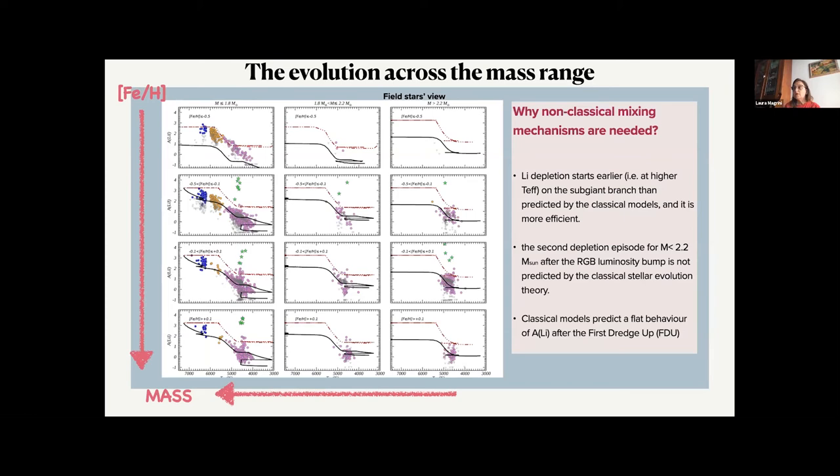And here we separated mass bins along the columns and in metallicity bins. Since the field population has a large range, a wide range of metallicity. And again, you can see the comparison with the two models and you can see that it's impossible to avoid having an extra mixing to reproduce the observation.